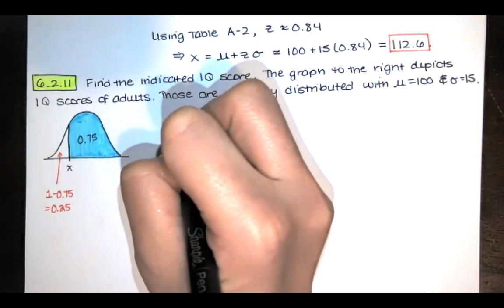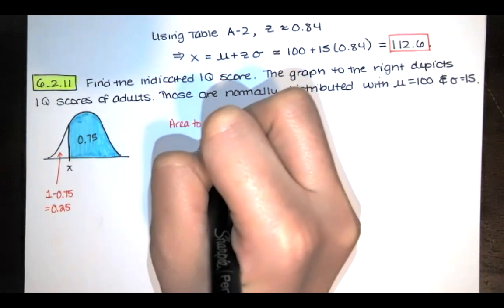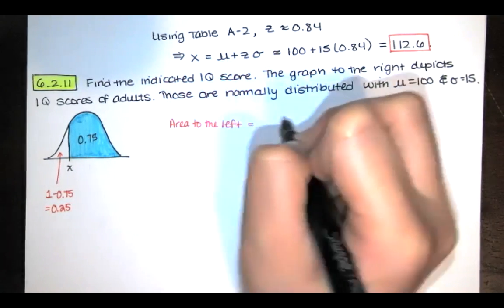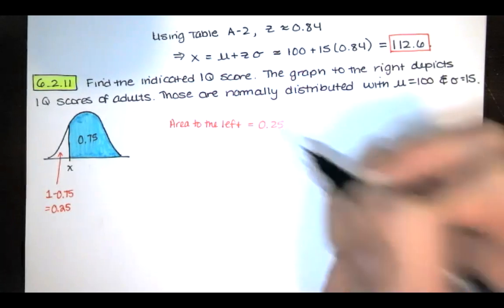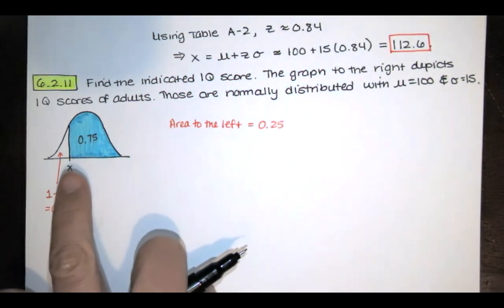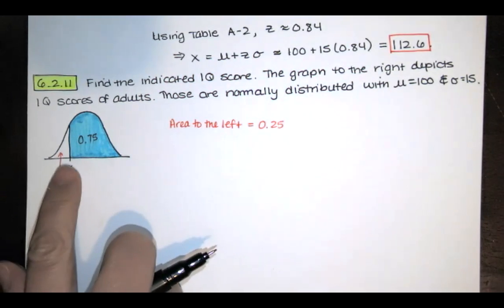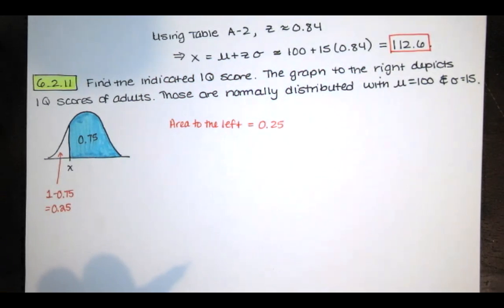So you find the area to the left first. Basically, we want the IQ score that separates that bottom 25% from the top 75%.